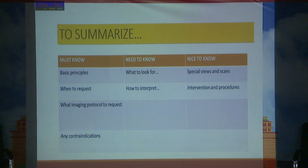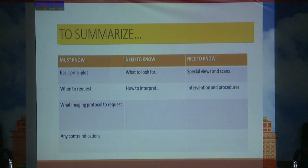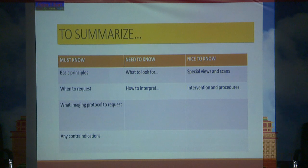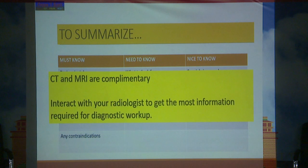To summarize, we have discussed the must-know areas: basic principles, when to request imaging, which imaging protocol to request, contraindications, what to look for in CT or MRI, and how to interpret diseases. It is also nice to know special views and scans and the various interventions and procedures. CT and MRI are complementary, and we should interact with our radiologist to get the most information required for diagnostic workup.